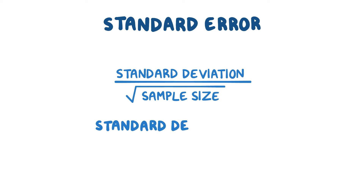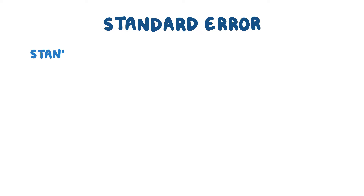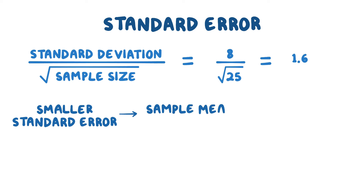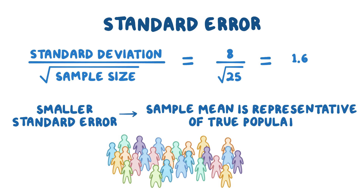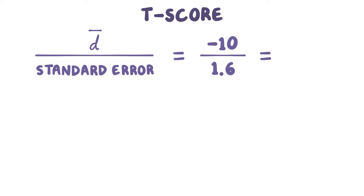Let's say the standard deviation for the differences is 8, meaning that on average the individual differences in blood pressure were 8 mmHg away from the mean of the differences. To calculate the standard error, we divide the standard deviation, 8, by the square root of the sample size, which is the square root of 25, or 5, and that equals 1.6. A smaller standard error shows that the sample mean is more representative of the true population mean, which means we can apply the results to the general population. To find the t-score, we divide the mean of the differences, minus 10, by the standard error, 1.6, which equals minus 4.96.